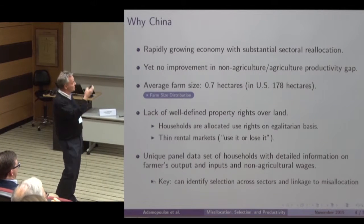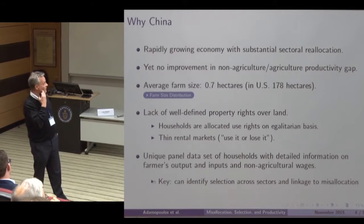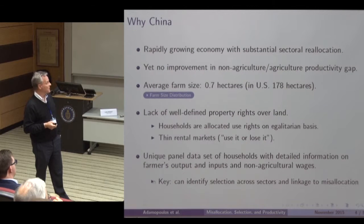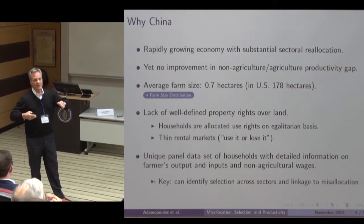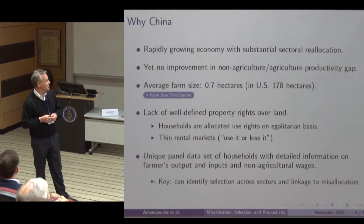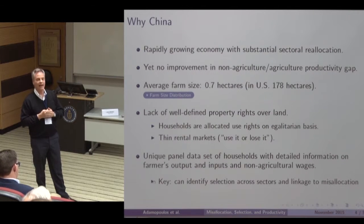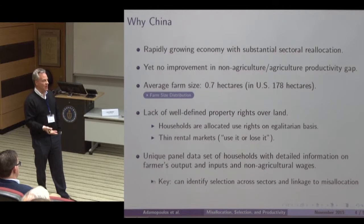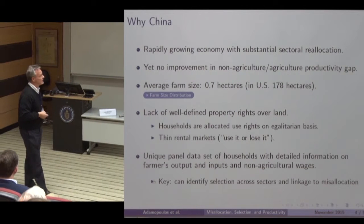Why take a look at China? There are all kinds of reasons. It's an economy that we know has grown very rapidly over the course of the last 30 or 35 years, and we've observed a lot of sectoral reallocation — a lot of movement of people out of agriculture to non-agriculture, people from rural to urban. But more generally, if we look at some measure of the productivity gap between non-agriculture and agriculture, over most of the 30 years there hasn't been much in the way of improvement in that ratio. What we would expect is that as people are moving out of agriculture, we'd actually expect productivity in the agricultural sector perhaps to be growing more rapidly than in non-agriculture, but at least in the case of China, this gap has remained relatively constant.